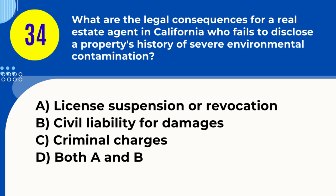Question 34. What are the legal consequences for a real estate agent in California who fails to disclose a property's history of severe environmental contamination? A. License suspension or revocation B. Civil liability for damages C. Criminal charges D. Both A and B. Answer: D. Both A and B. Explanation: Failing to disclose severe environmental contamination can lead to license suspension or revocation and civil liability for a real estate agent.